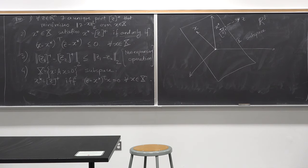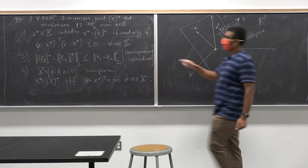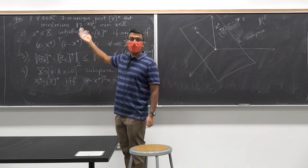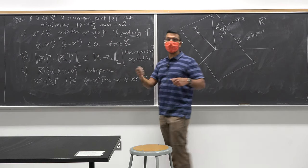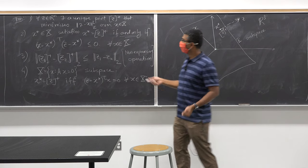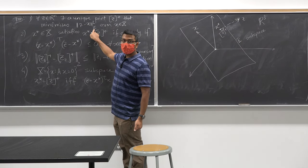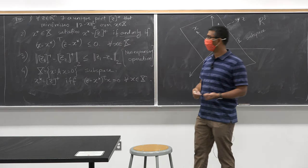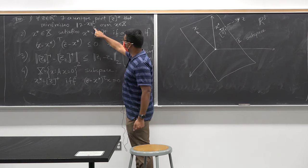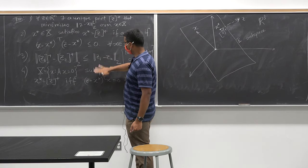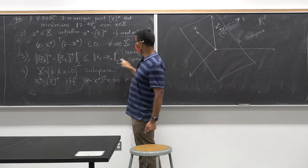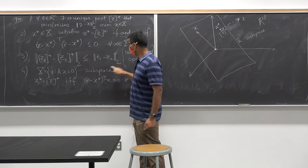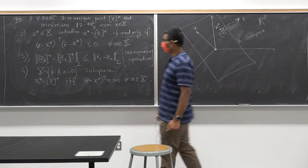This is known as the projection theorem. The most important thing to remember is that you are always minimizing the L2 norm. Even though we talked about different types of norms on R-n, projection specifically uses the L2 norm. The non-expansive operation also only holds for the L2 norm — it won't hold for any of the other norms on R-n.